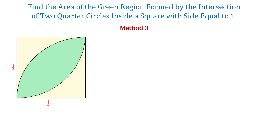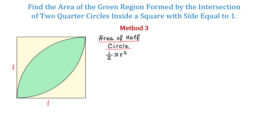Now let's see method 3. In this figure, two quarter circles overlap, forming this green region. These two quarter circles together form half a circle. If we find the area of this half circle and subtract the area of the square, then we will get the area of this green region. To find the area of half a circle, we use the formula 1/2 times π times radius squared.